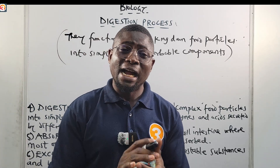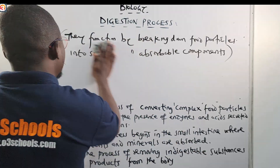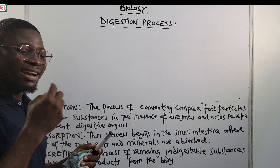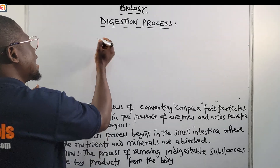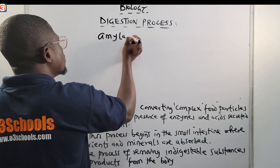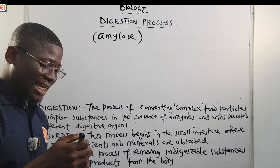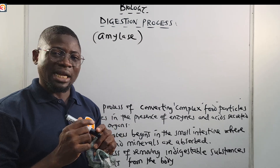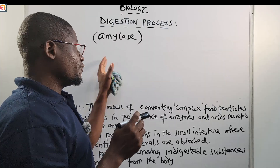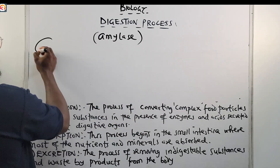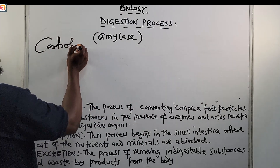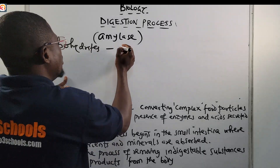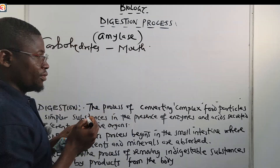For carbohydrates, digestion starts from the mouth. The salivary gland has an enzyme called amylase that helps to break down carbohydrates into simple sugars. So for carbohydrates, digestion begins from the mouth. Please take note of that — we'll see a question about that in the question session.